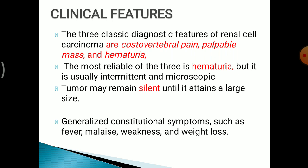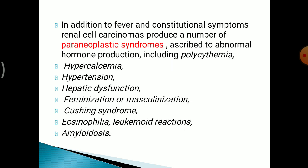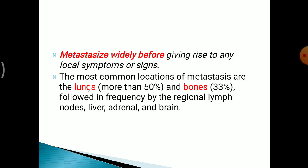The clinical course: the three classic diagnostic features of RCC are costovertebral pain, a palpable mass and haematuria. The most reliable of these is haematuria, which is intermittent and microscopic. The tumour may remain silent until it attains a large size. Constitutional symptoms such as fever, malaise, weakness and weight loss are also observed. They also produce paraneoplastic syndromes including polycythaemia, hypercalcaemia, hypertension, hepatic dysfunction, Cushing syndrome, eosinophilia and amyloidosis. They metastasise widely before giving rise to local symptoms; the most common locations for metastasis are lungs followed by bones.